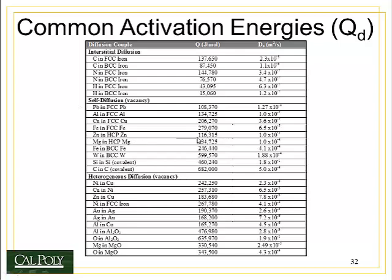Another low melting point material, like zinc, has close to the same activation energy as lead, but a little bit higher, because it has an HCP crystal structure with the same packing factor as FCC. So we'd expect them to have similar activation energies. A very high melting temperature material like tungsten has almost 600,000 joules per mole because of its high melting point. Covalently bonded materials also have very high melting points and therefore very high activation energies because of the strength of those covalent bonds compared to metallic bonds.